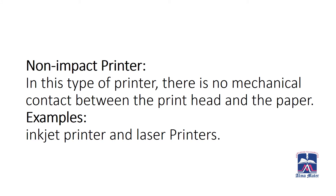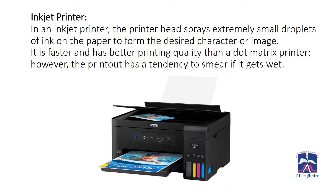In a non-impact printer, there is no mechanical contact between the print head and the paper. Examples are inkjet printer and laser printer. Impact printers have been replaced by non-impact printers. In an inkjet printer, the print head sprays extremely small droplets of ink on the paper to form the desired character or image. It is faster and has better printing quality than a dot matrix printer. However, the printout has a tendency to smear if it gets wet.